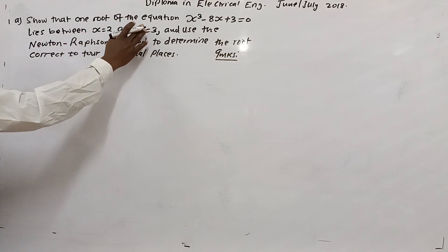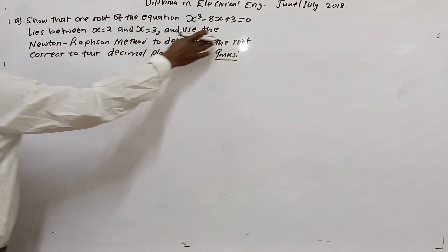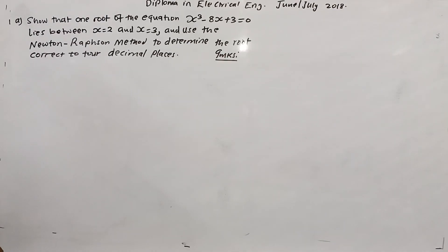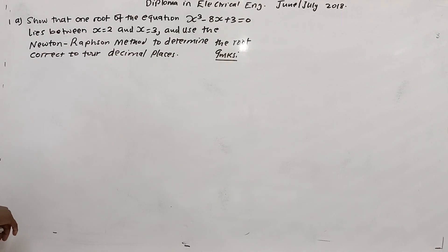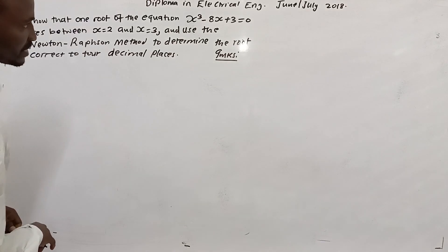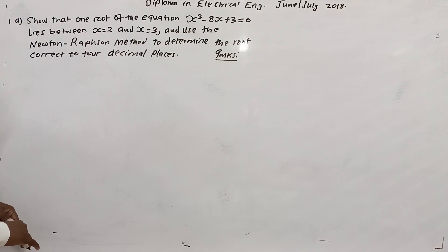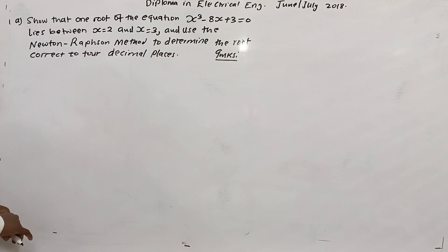This problem is from a past paper from July 2018 for electrical engineering. We are told to show that one of the roots of the equation x³ - 8x + 3 = 0 lies between x = 2 and x = 3, and then use Newton's method to determine the root correct to four decimal places.